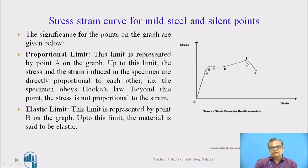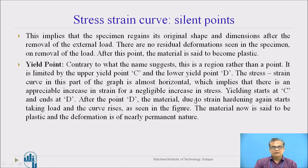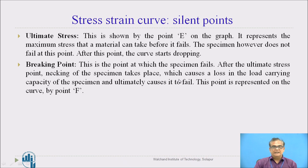Thereafter, stress increases again until the ultimate point E is reached, where the stress taken by the specimen is maximum — this is the ultimate stress. After this, a drop occurs in stress and the breaking stress is obtained at point F. After ultimate stress, necking starts — a reduction in diameter at the weakest point — and the load decreases slightly below the ultimate. The breaking load is lower than the ultimate load, and the breaking stress at point F is also recorded.